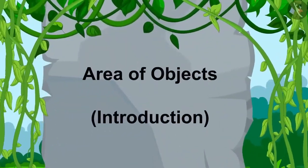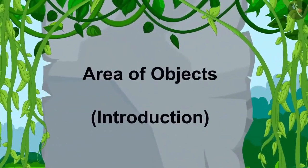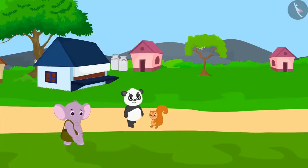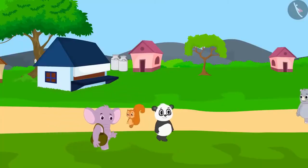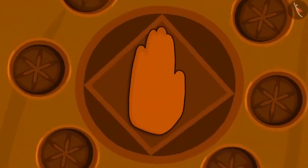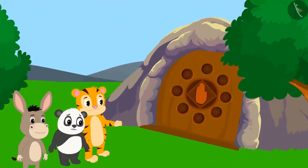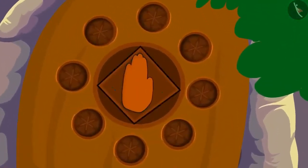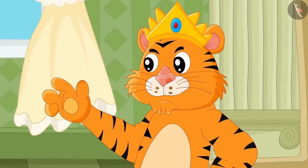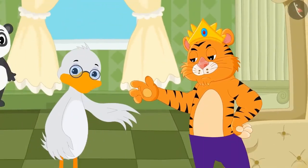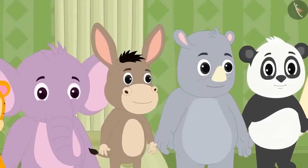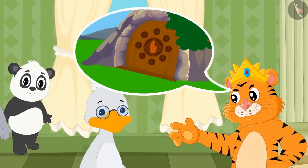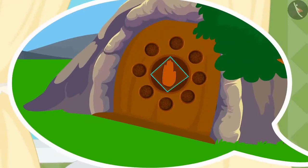In this video, we will learn to estimate the area of objects. There is a lot of chaos in Champapur today. This morning, a door has been found in a cave. But this door can only be opened by the hand of one of the villagers. The king of Champapur has entrusted Barbole uncle with the responsibility of finding the villager whose hand impression matches the hand impression on the door.